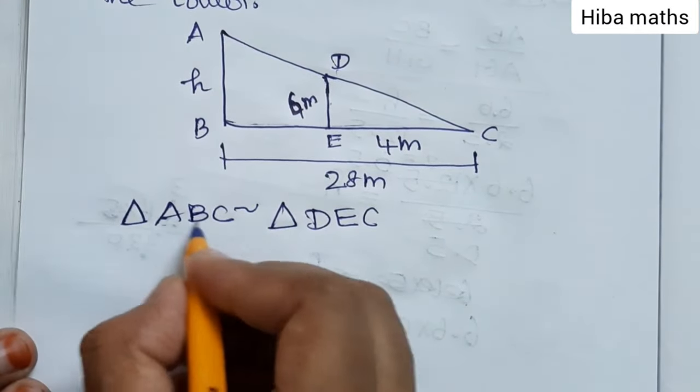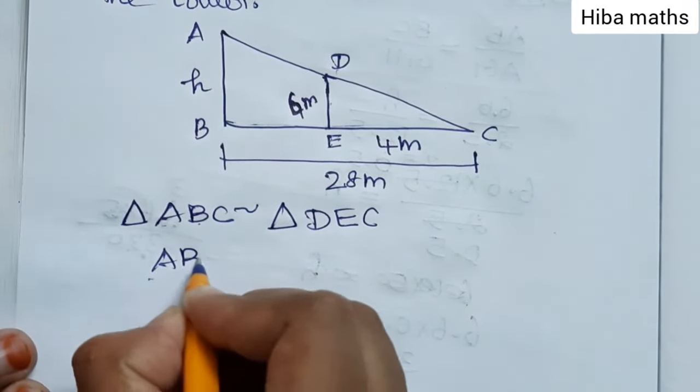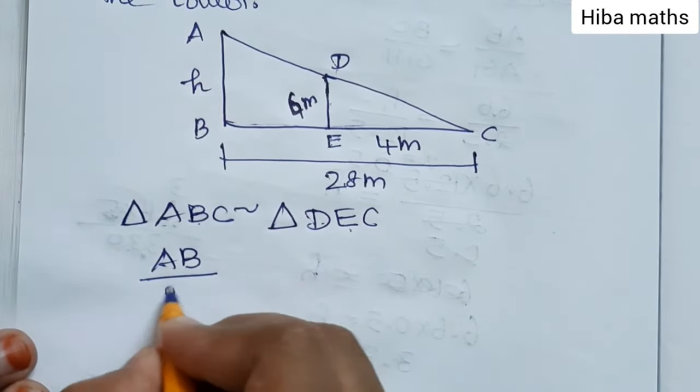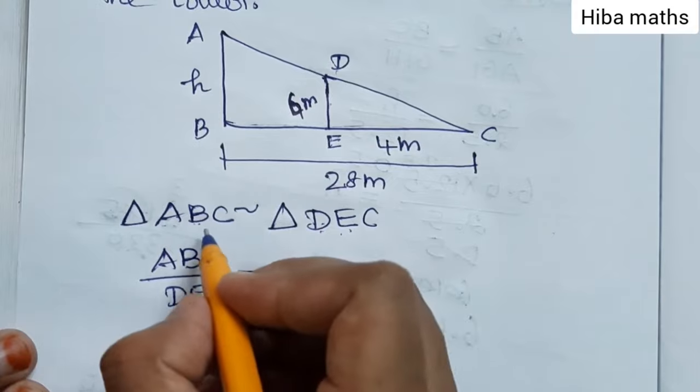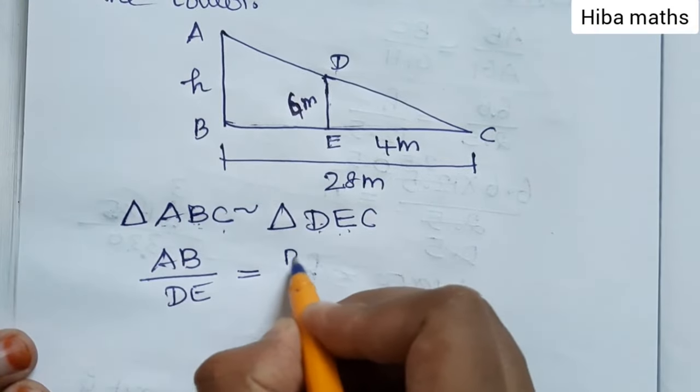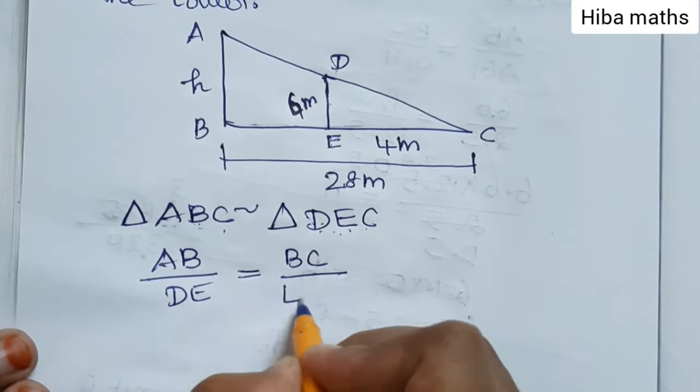So what is the condition for similarity? AB divided by DE equals BC divided by EC. Opposite sides have the same ratio.